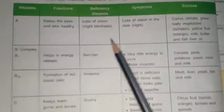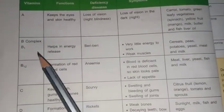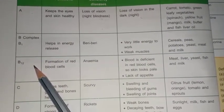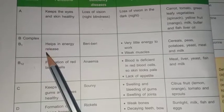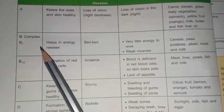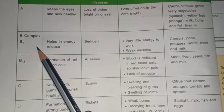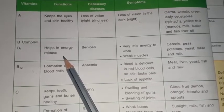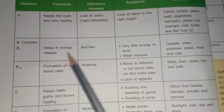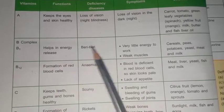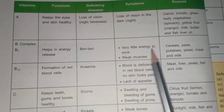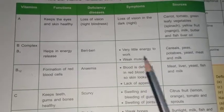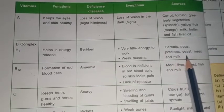Next we have Vitamin B. Vitamin B consists of Vitamin B1 to B12 complex, but in this chapter we will study only Vitamin B1 and B12. Vitamin B1 helps in energy release. A deficiency of Vitamin B1 causes Beriberi disease. Its symptoms are very little energy to work and muscles become weak. Its sources are cereal, peas, potato, yeast, etc.